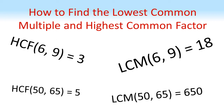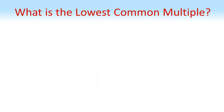How to find the lowest common multiple and highest common factor. The lowest common multiple of two numbers is the lowest number which is a multiple in the times table of both of the numbers.